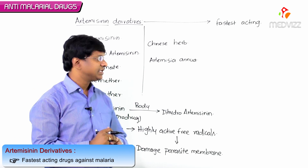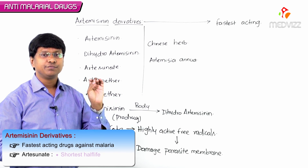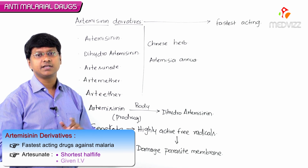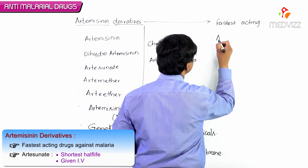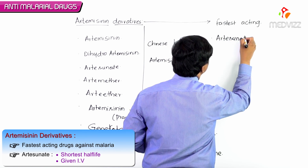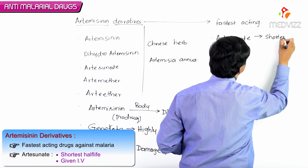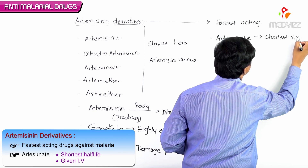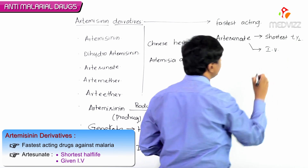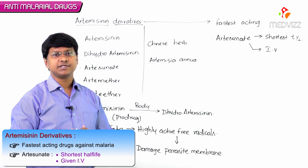Among these drugs, artesunate has a very short half-life, and that is the reason why it can be given intravenously. So artesunate has the shortest t-half among the artemisinin derivatives and can be administered intravenously.